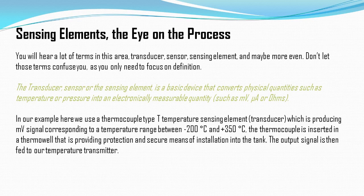In the process industry, sensors are placed just like the human senses. The sensor acts as the eye on the process. Just as when driving, you make actions based on what you see — stopping for traffic or traffic signals — everything is first visualized by the eye and then the brain takes action. In the process industry, the instrument acts as that eye.